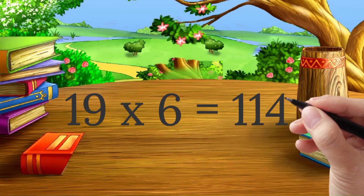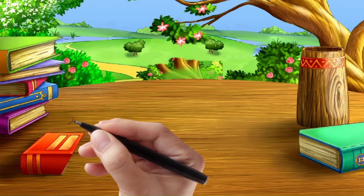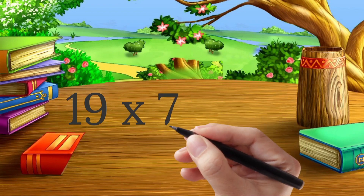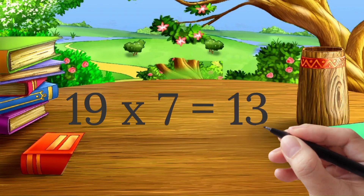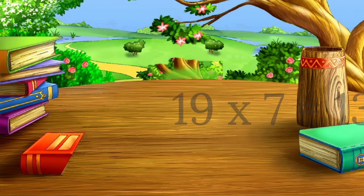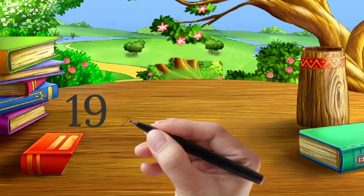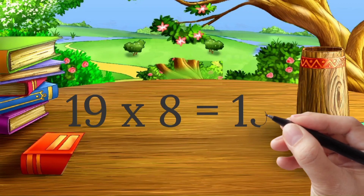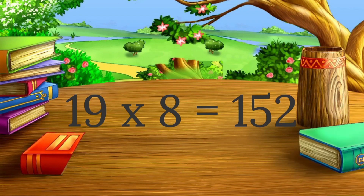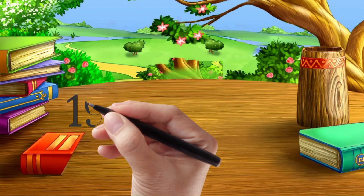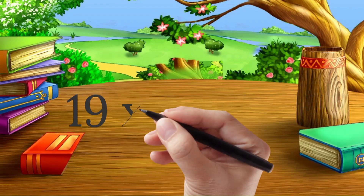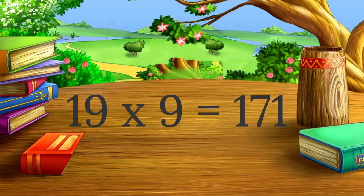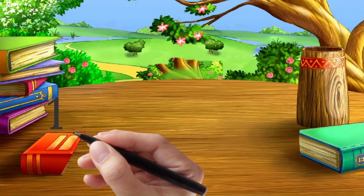19 six's are 114. 19 seven's are 133. 19 eight's are 152. 19 nine's are 171.